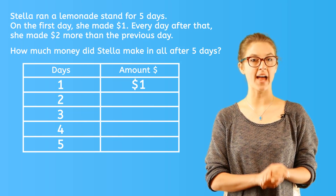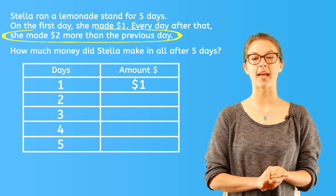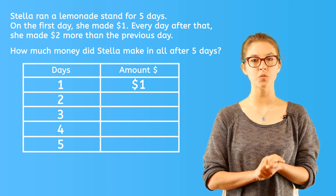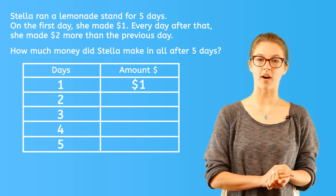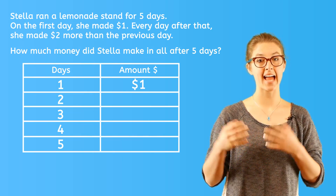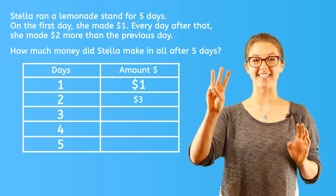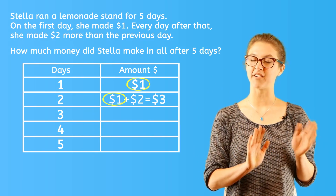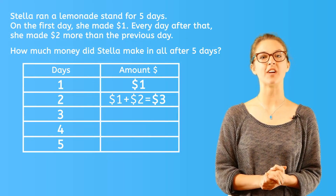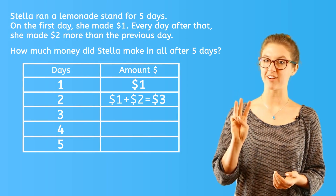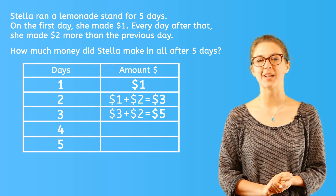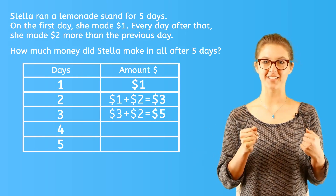Every day after the first day, Stella made two more dollars than the previous day — which means two more dollars than the day before. That means on day two, Stella made three dollars: one dollar from the previous day plus two dollars more equals three dollars. We continue to fill in the rest of the chart in the same way. On day three, Stella made two dollars more than three dollars, so three dollars plus two dollars equals five dollars on day three.